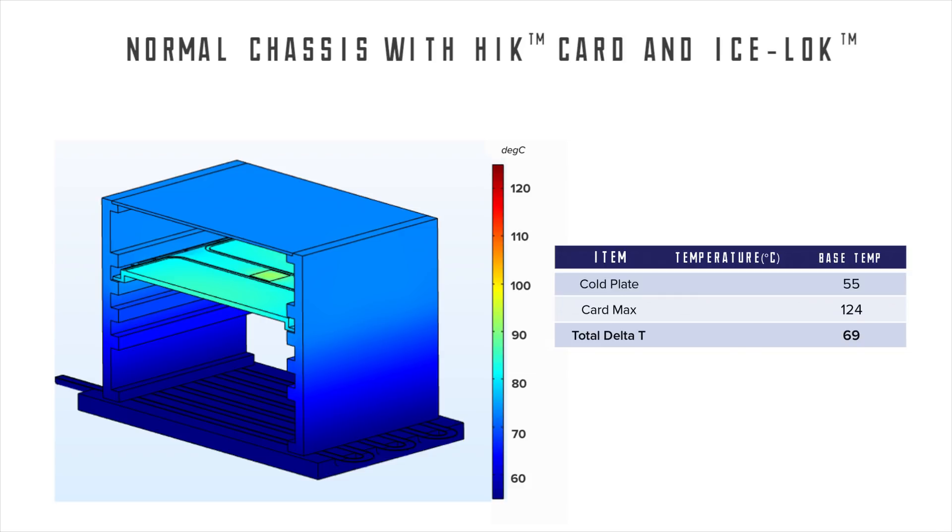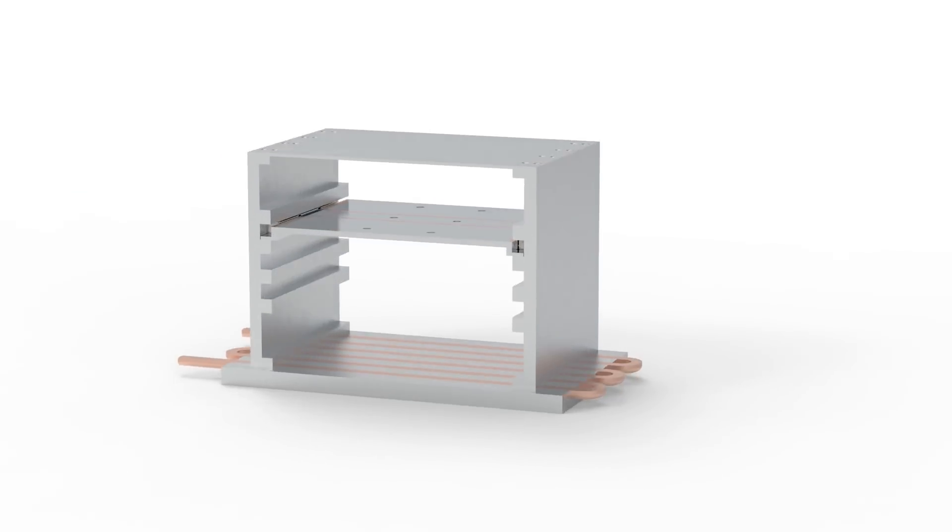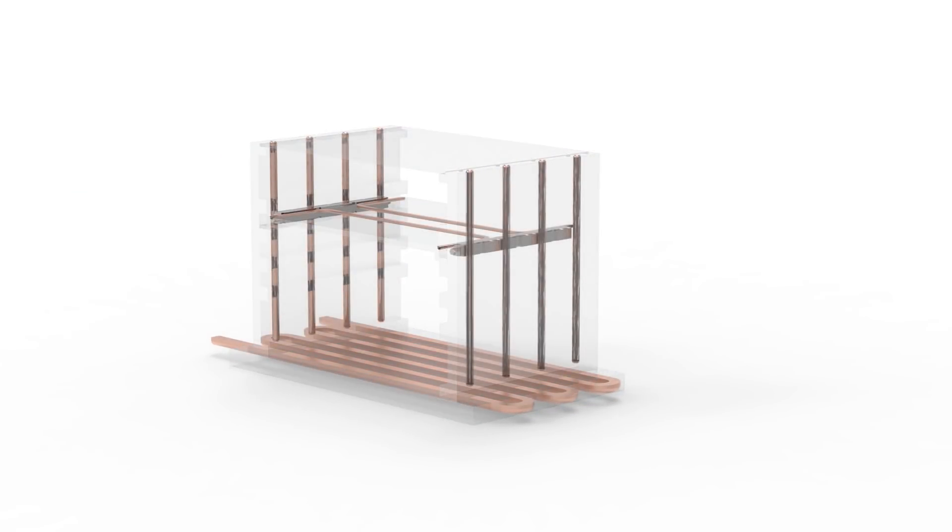The card max temperature is now 92 degrees C, which is a total delta T of 37 degrees C. With these two minor changes, neither of which significantly affects geometry or weight, the system operates over 30 degrees cooler than the baseline model.